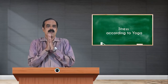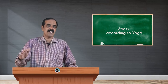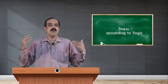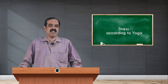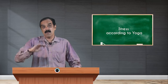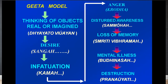When there is no pure love but only expectation — kama — and someone disturbs that, krodha or anger arises. Krodha leads to sammoha: disturbed awareness where we no longer know who we are. We forget our name, we forget our relatives. This is like the sammohana astra described in the Ramayana and Mahabharata — when that arrow is released, everyone forgets everything.